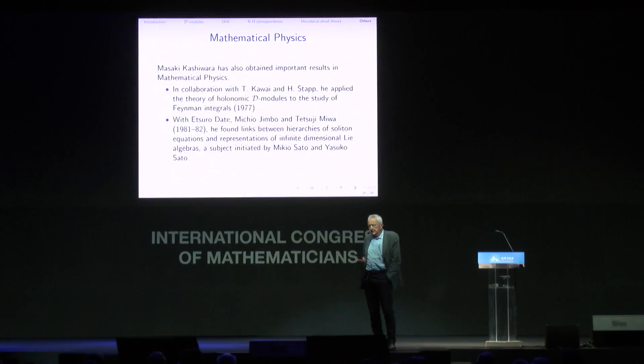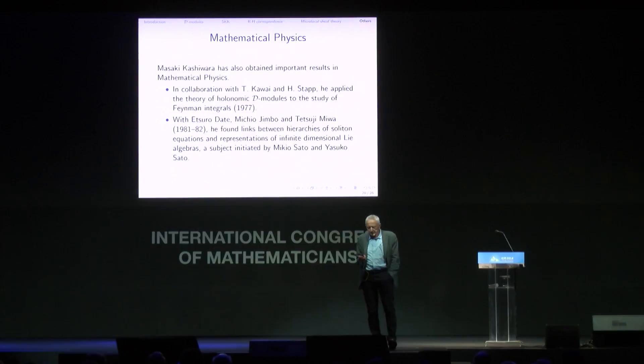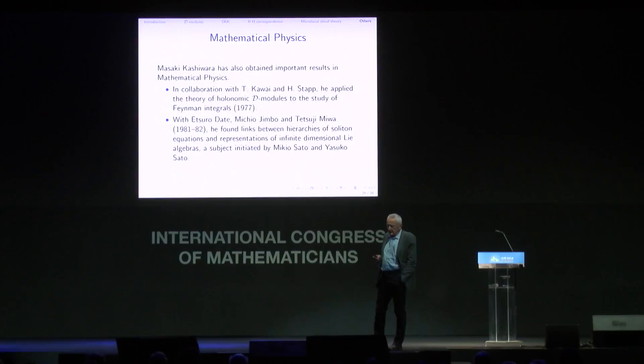Kashiwara has also worked in mathematical physics. With Kawai and Stapp, they applied the theory of holonomic D-modules to Feynman integrals. With Date, Jimbo, and Miwa, they found links between hierarchies of soliton equations and representations of infinite-dimensional algebras, a subject initiated by Mikio Sato and his wife Yasuko.